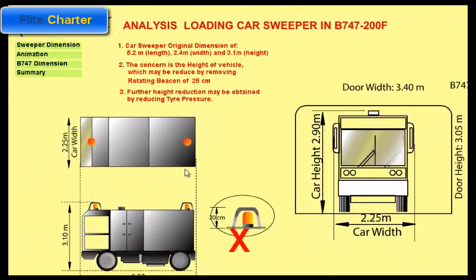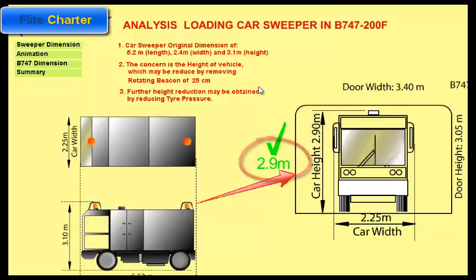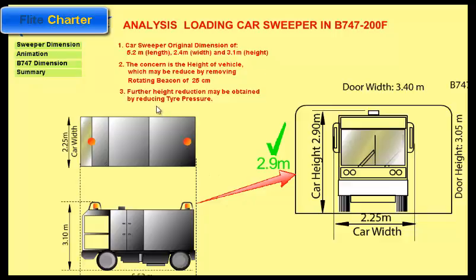The height is a concern. By removing the beacon, the height will reduce by 20-25 cm, giving a height of 2.9 meters against a door height of 3.05 meters. Furthermore, we can reduce the tire pressure to reduce another 5 cm. So in this case, our main concern is the height.